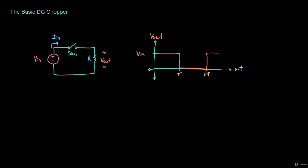So we are going to turn switch one on and off once every cycle. What this does is that the average of the output voltage — let's say Vout — is going to be somewhere lower than the input voltage, around here. Let's calculate the average of Vout.